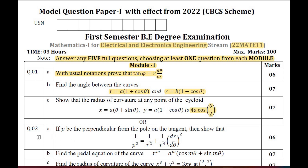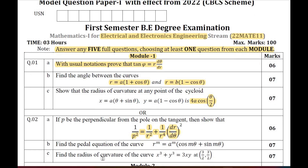Moving on to the choice question. Question Number 2A: derive the pedal equation 1/p² = 1/r² + (1/r⁴)(dr/dθ)². Question Number 2B: problems on pedal equation — given r^m = a^m(cos mθ + sin mθ). Question Number 2C: find the radius of curvature for the curve x³ + y³ = 3xy at the point (3/2, 3/2). This is the question pattern for Module 1.